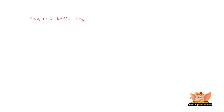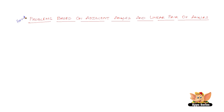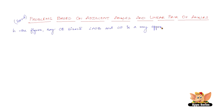Let us solve problems based on adjacent angles and linear pair of angles. The question is: in the figure, ray OE bisects angle AOB and OF is a ray opposite to OE. Show that angle FOB equals angle FOA.